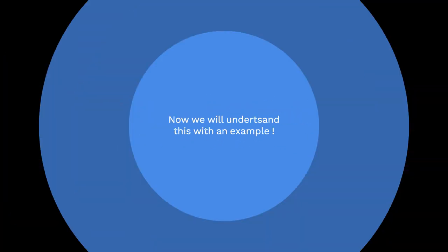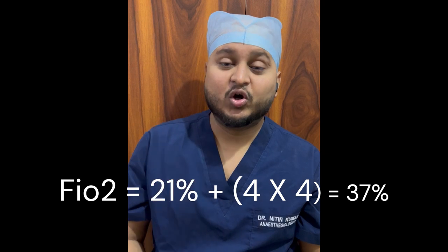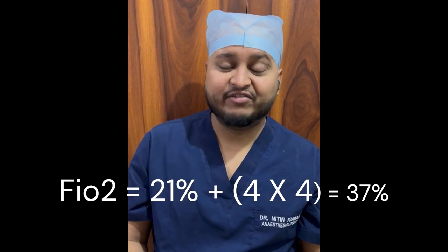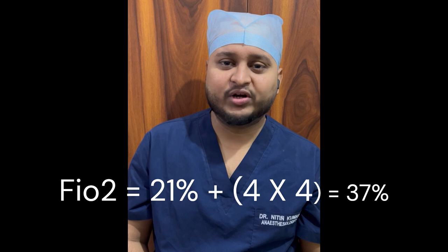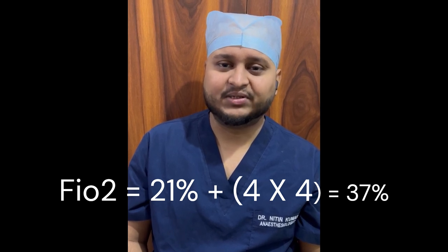For example, if we start our oxygen flow from the flow meter at 4 liters per minute, then the FiO2 of the patient will be 21% + (4 × 4), that is 21 + 16, which equals 37%.